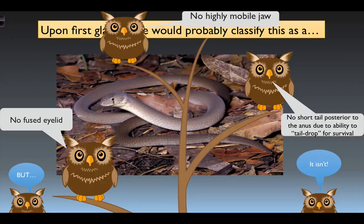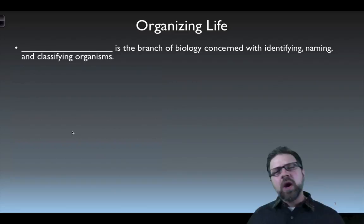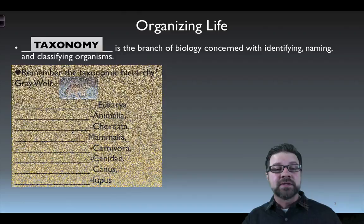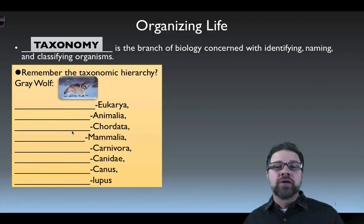There's no doubt you're probably thinking snake upon first looking at it, but once we get into the characteristics of this animal — the same characteristics that help us classify it using a branch of science called taxonomy — we see it's not a snake at all. Instead, this is a legless lizard. We are into organizing life through a branch of biology called taxonomy, whose concerns are identifying, naming, and classifying organisms.